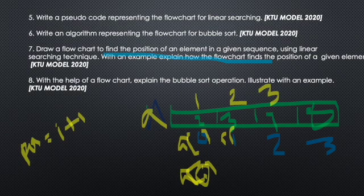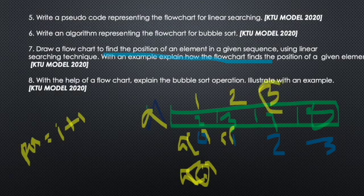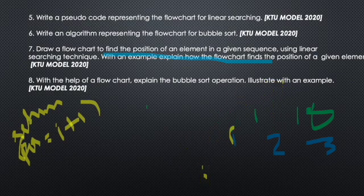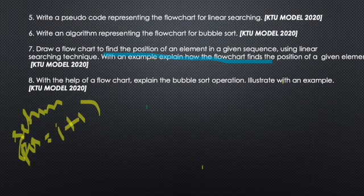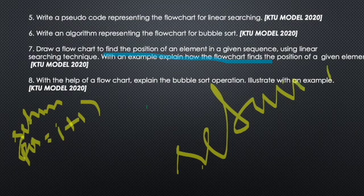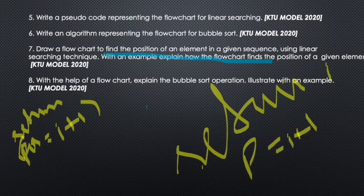If i value is 2, then we use A of 2, which equals 7. Then we use position equals 2 plus 1 equals 3. If we return the position, there is another consideration — we have to search using the same logic. We find the element, and if we find the position, we return the position.